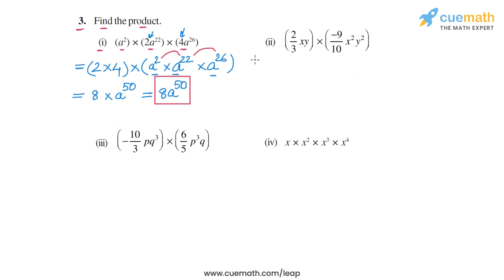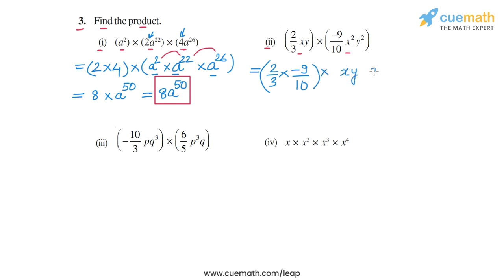Now coming to part 2. In part 2, we have to calculate (2/3)xy × (−9/10)x²y². We will multiply the coefficients separately and the algebraic factors separately. The coefficients are 2/3 and −9/10. So 2/3 × (−9/10): −9 ÷ 3 = −3 and 10 ÷ 2 = 5, giving us −3/5 as the coefficient of the product.